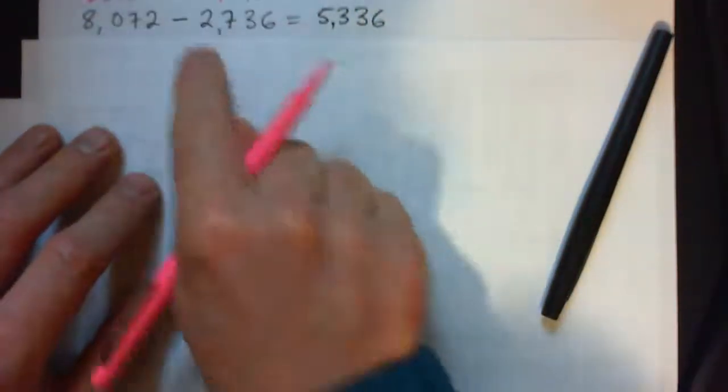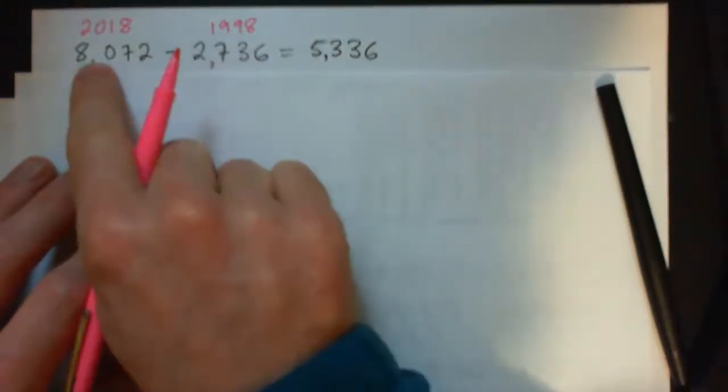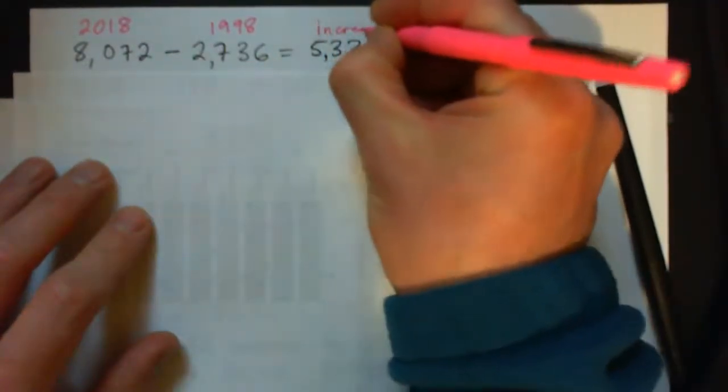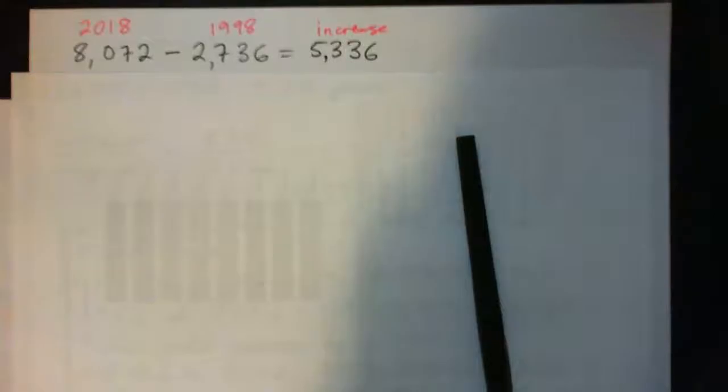Hi everybody. I'm just going to run through this example with you. In 1998, this was our tuition. By 2018, this is our tuition. So there's 1998, there's 2018. That equals this, and this is the increase in tuition. Tuition increased to $5,336.